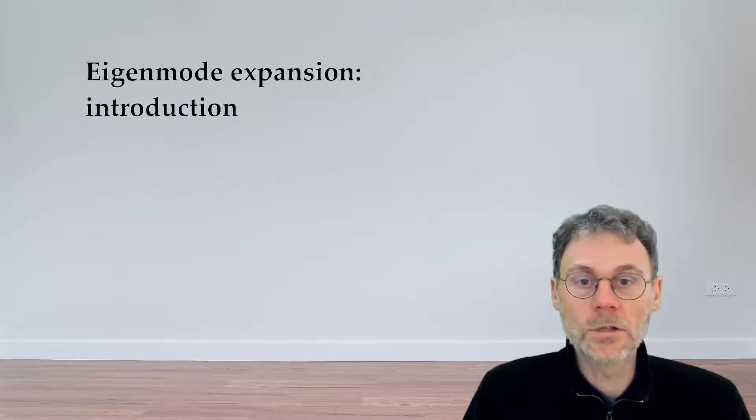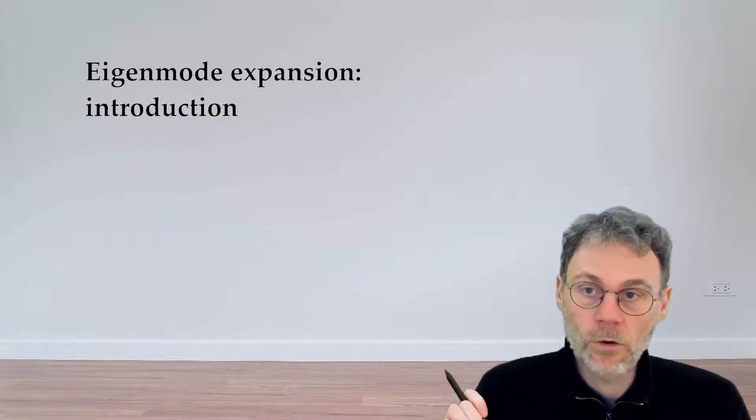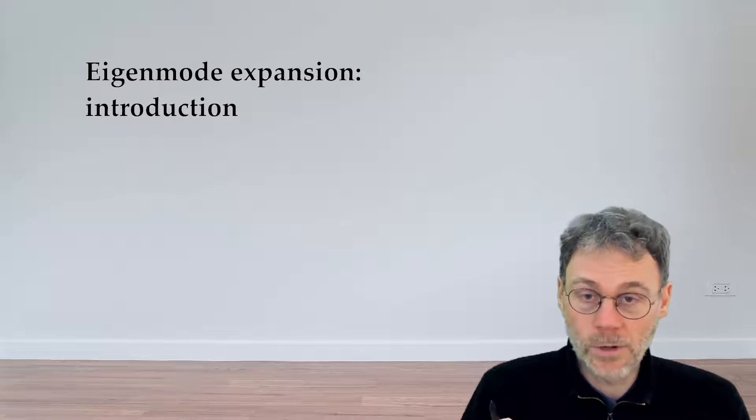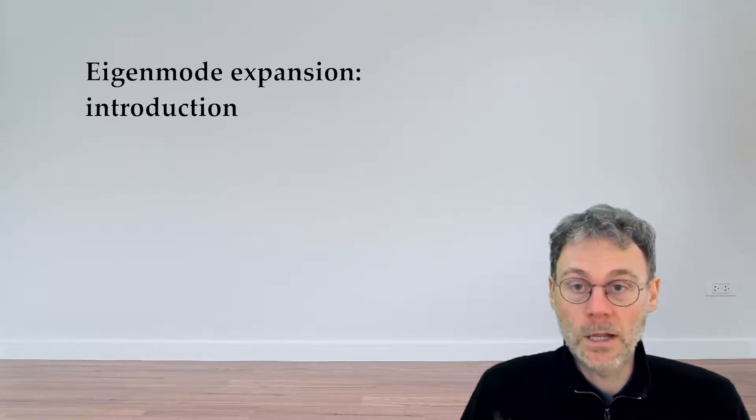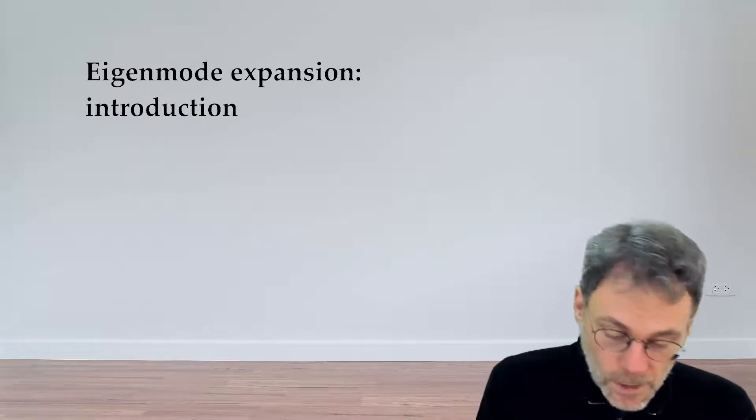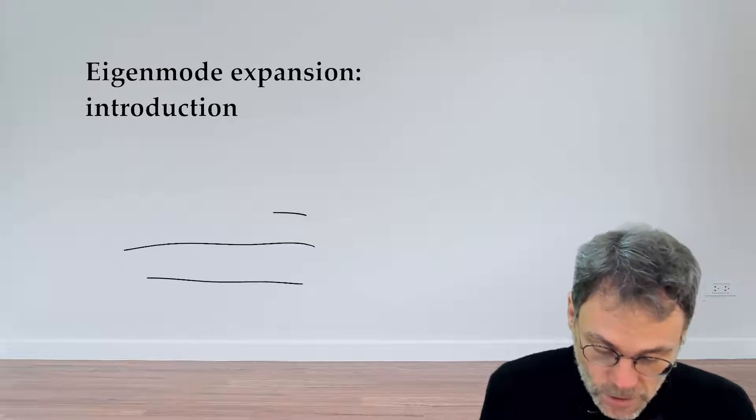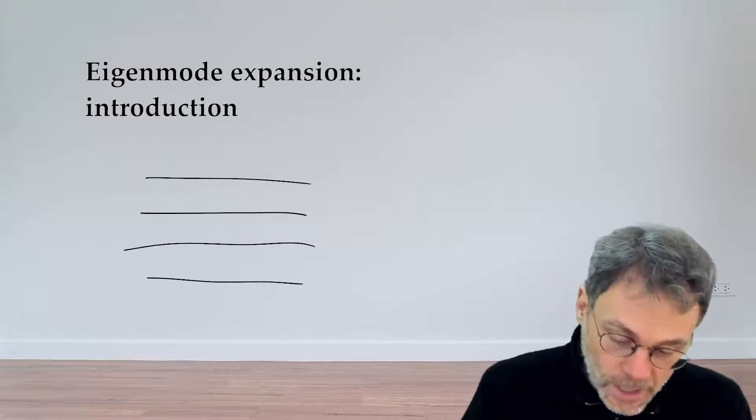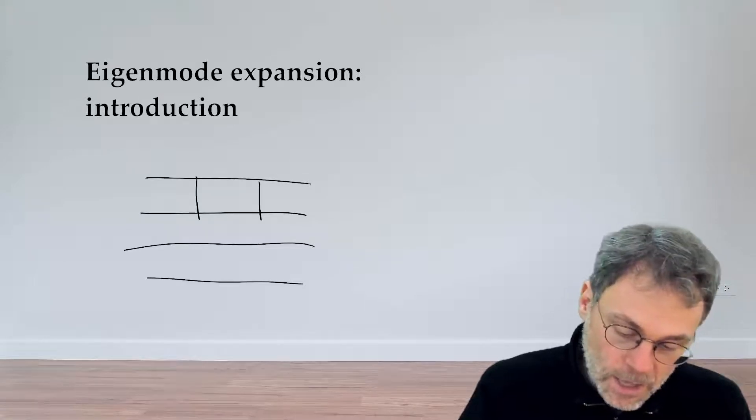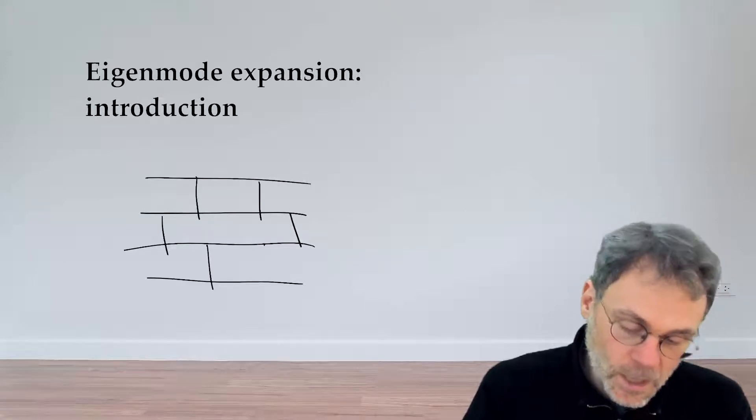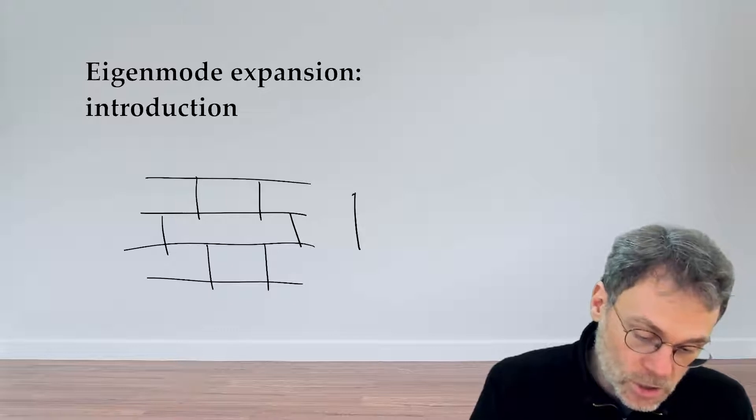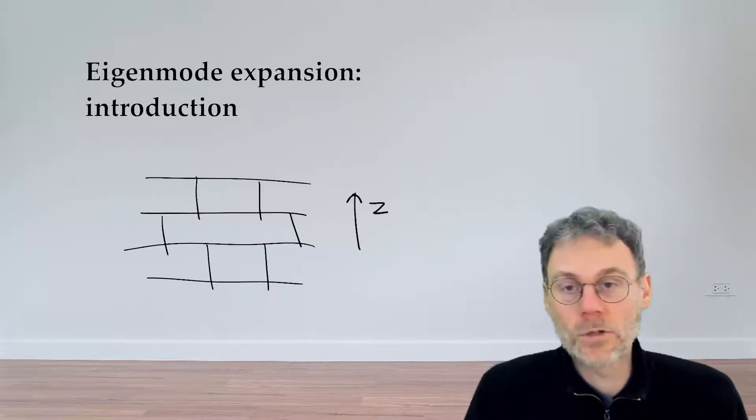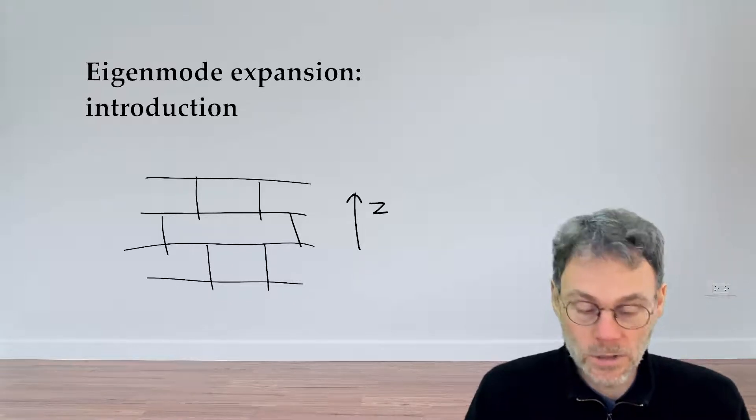Now what are these mysterious structures for which Eigenmode expansion is very well suited? Well it's basically cake. It's a layer of different structures forming a certain cake of layers, and each of the layers in this cake has a refractive index profile which does not change in a certain direction which we're going to call here the propagation direction z.